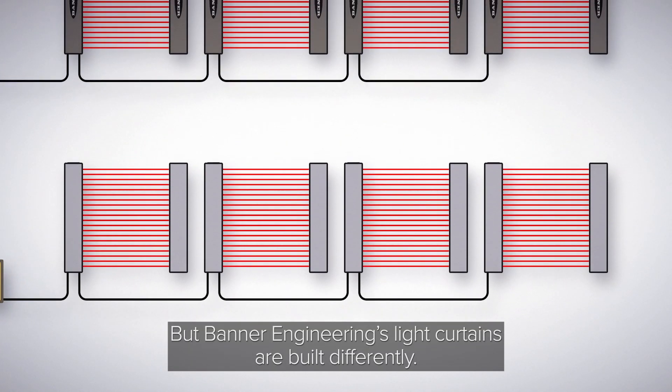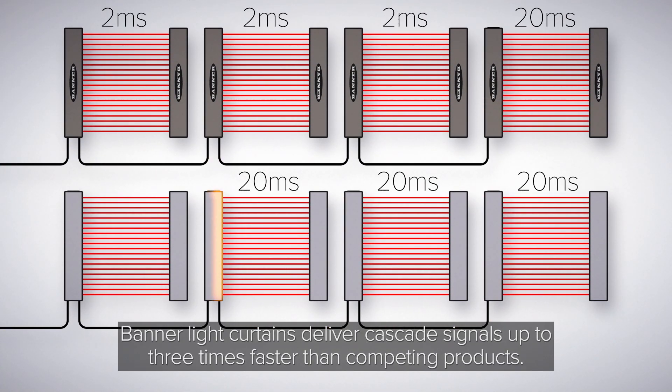But Banner Engineering's light curtains are built differently. Banner light curtains deliver cascade signals up to three times faster than competing products.